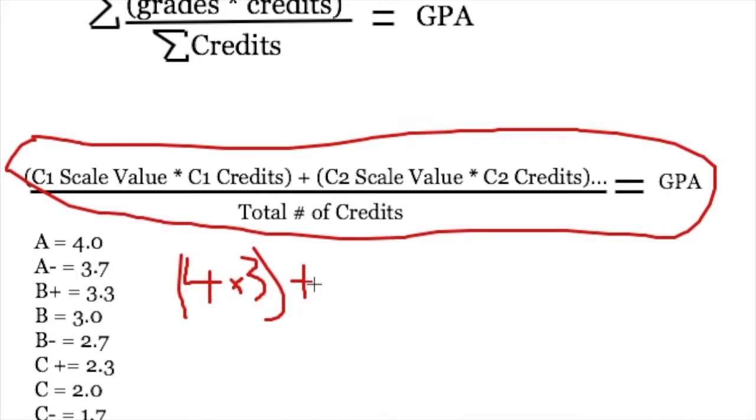So let's say your second course is, I don't know, maybe sociology. Let's make it interesting. Say you get an A-, and so for an A-, you look over here and you say A- corresponds to 3.7. So you put in 3.7. And again, let's say that that is a three credit class. So you multiply that by three. And I'm going to put parentheses, and just know that these are parentheses because they don't look like it.